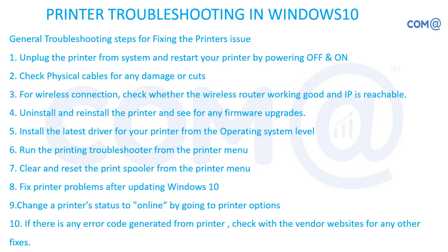The first troubleshooting scenario is when you are not able to get a printout from the printer. You don't know what the issue is — the printer is hung, not responding, or the light is not glowing properly. A basic layman step is to first unplug the printer from the system to stop communication between the computer and printer, then restart the printer by powering off and powering on. If the printer is hung, memory is full, or data has collapsed inside, this will clear the memory and print jobs so the system is free and loads fresh from the beginning.